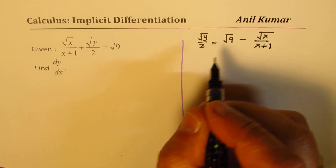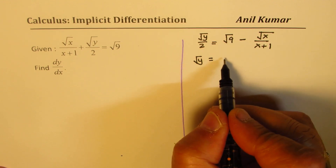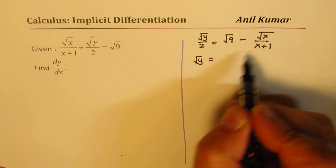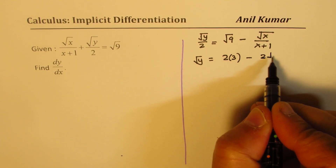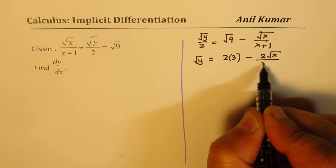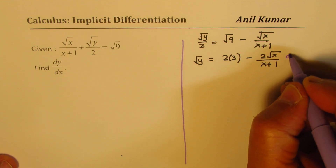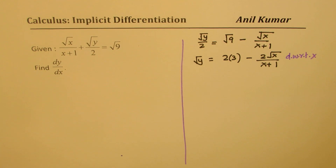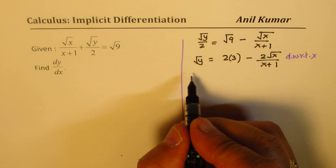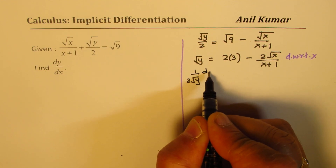Or we can write square root of y as equal to — this is 3 — so we can just multiply all of them by 2 to get 2 times 3 minus 2 times square root of x over (x plus 1). If you differentiate with respect to x on both sides, the derivative of square root of y will be 1 over 2 square root of y times dy/dx.